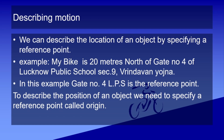Now we have understood motion, so let's describe how it is done. We can describe the location of an object by specifying a reference point. For example, I choose gate number 4 of LPS Vrindavan Yojana as the reference point. My bike is standing 20 meters from it. Time passes — the bike is still there, so it is at rest. But if a little later the bike moves from 20 to 21, 25, 30 meters away — now my bike is in motion. If its position is changing with reference to the chosen point, it is in motion; if not, it is at rest.